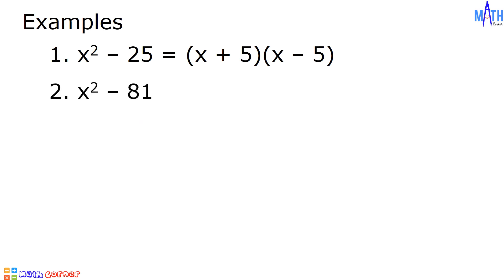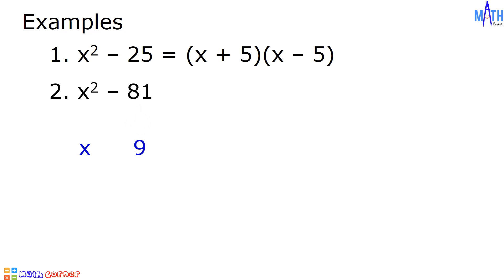Example number 2: Let us factor x squared minus 81. Square root of x squared is equal to x. Square root of 81 is equal to 9. Then we have x plus 9 times x minus 9.